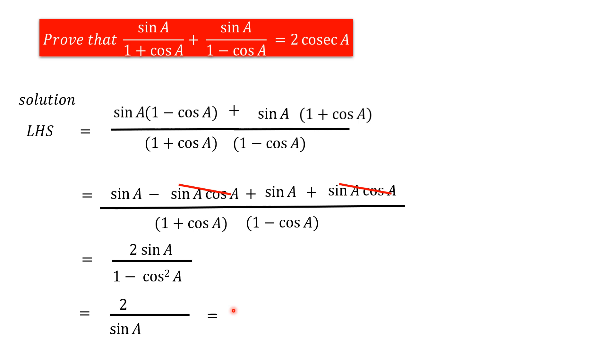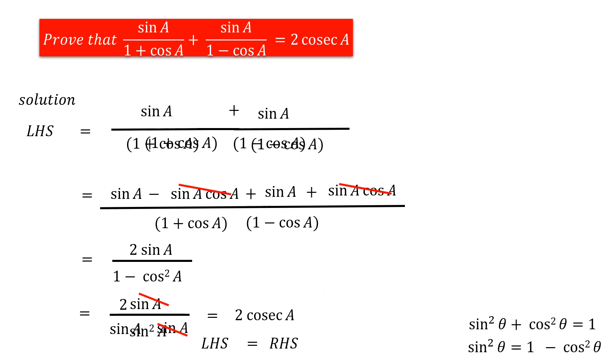So, 1 by sin A is equal to cosec A. So, 2 into cosec A. This is equal to right hand side of this question. LHS equals RHS. Hence, it is proved. I hope you understand the concept very well. Thank you for watching.